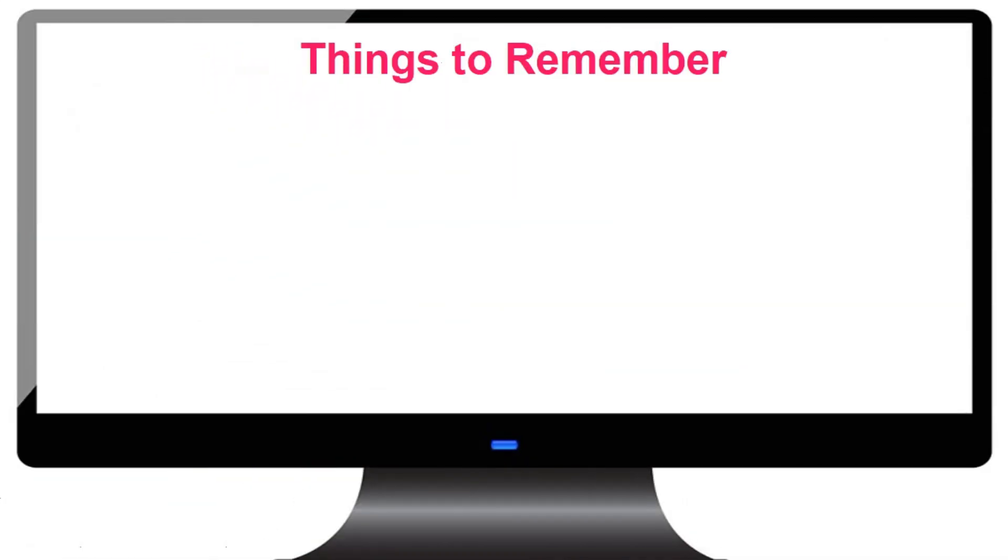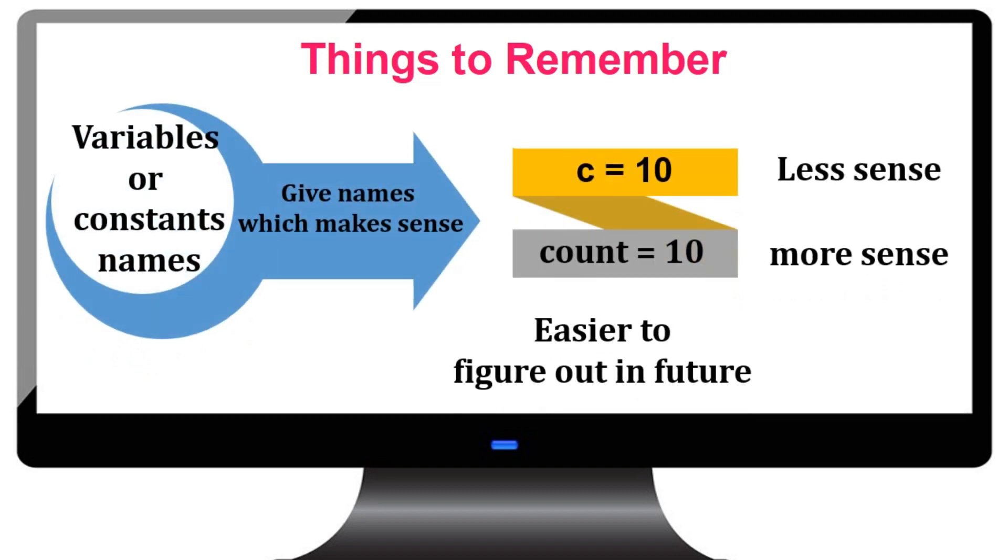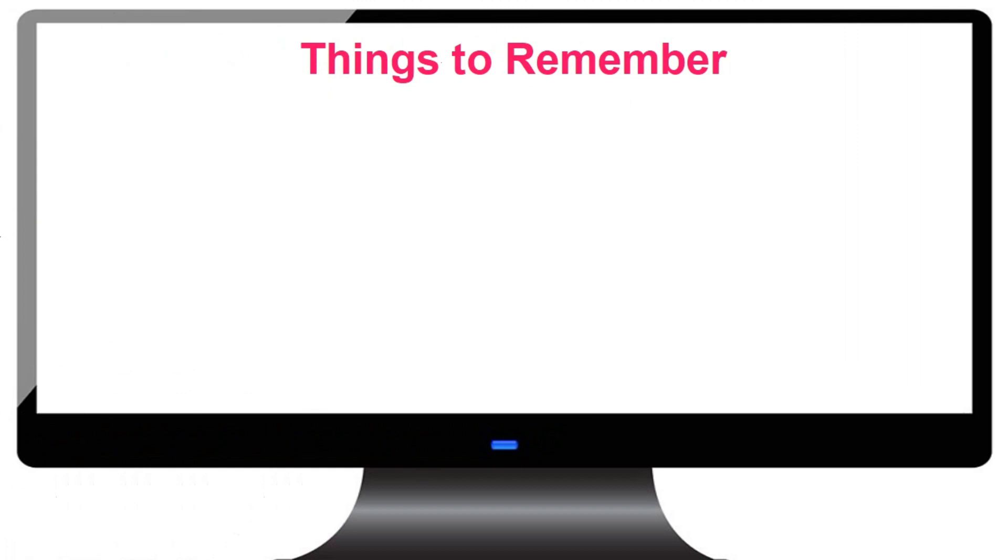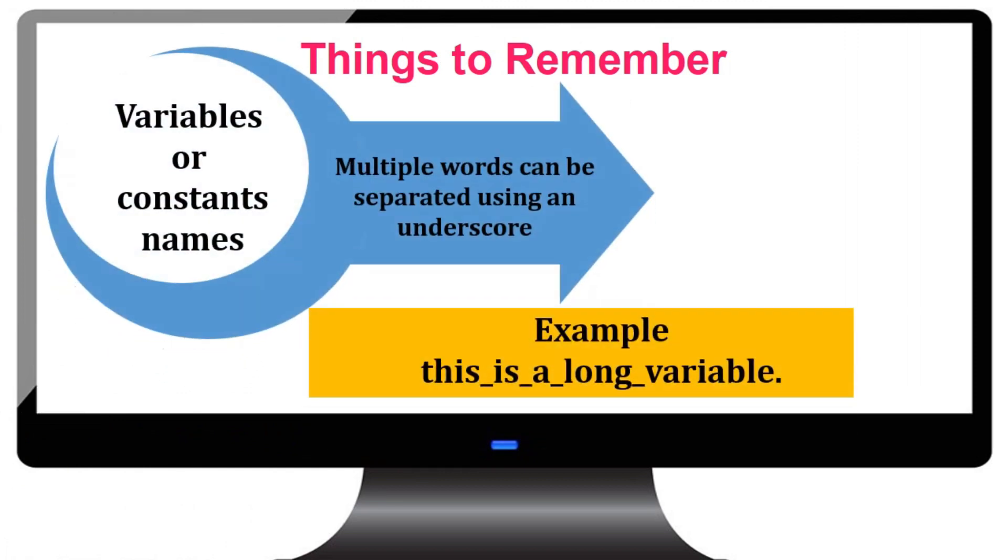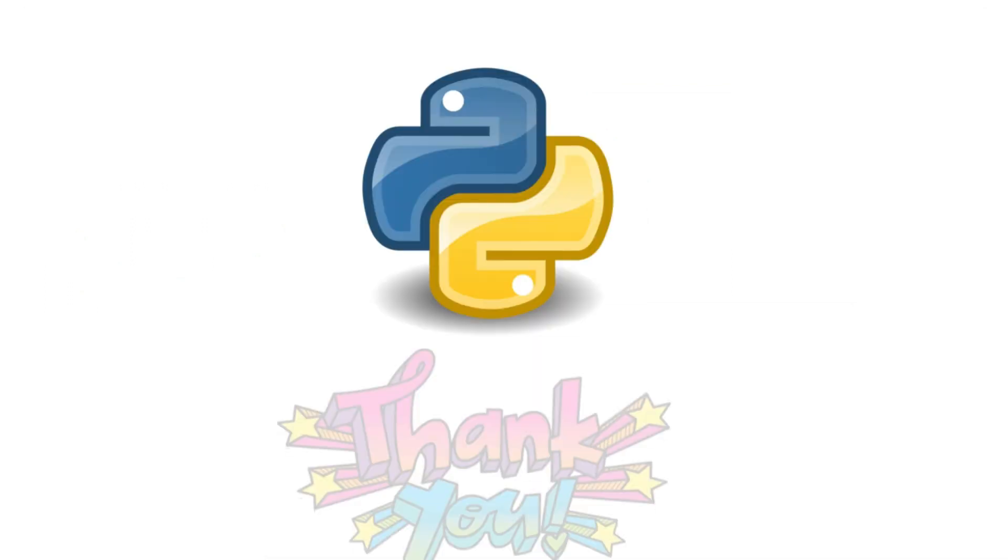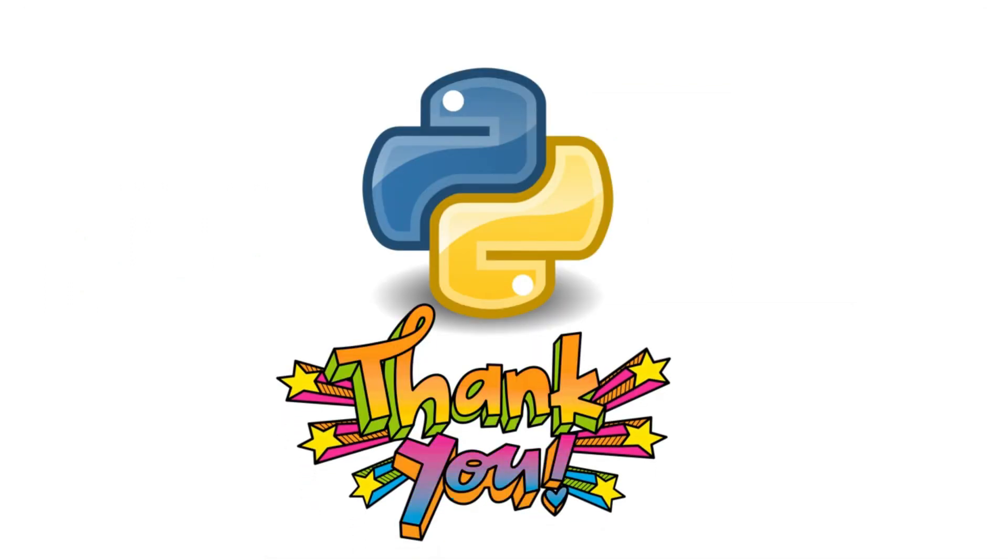And, the variable name should be given with some sense, so it will be easy to figure out in future. The variable name if it is more longer or had multiple words, you can separate using an underscore symbol. This tutorial will give you a clear understanding of the concept, variable and constants. Thank you.